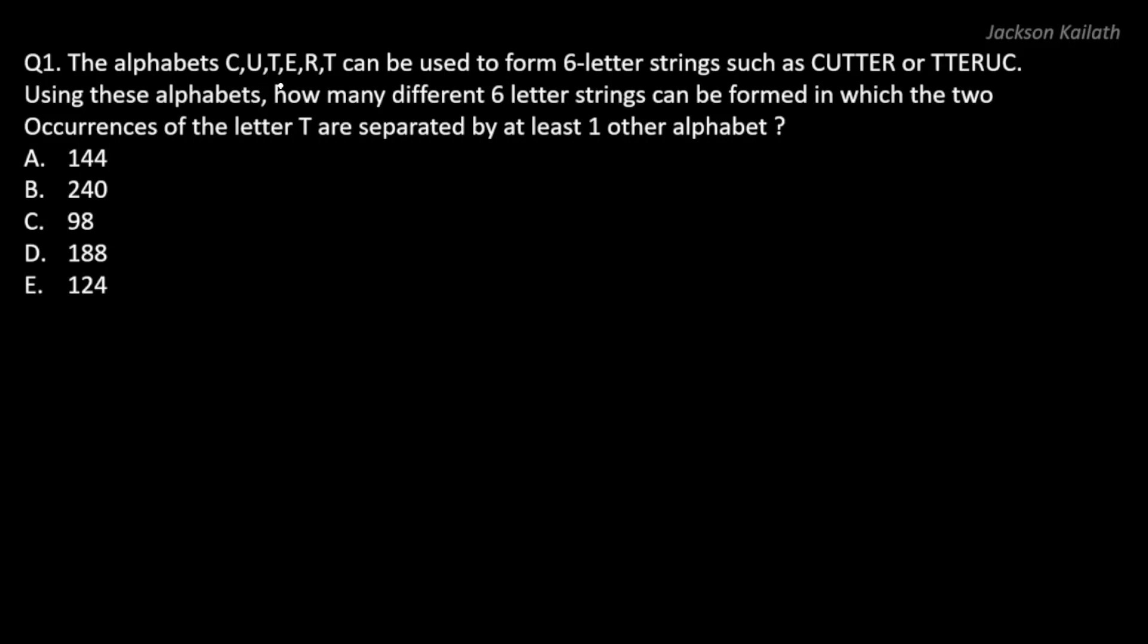Let's read the question. The alphabets C, U, T, E, R, T can be used to form six-letter strings such as CUTTER, TERUC, etc. Using these alphabets, how many different six-letter strings can be formed in which the two occurrences of the letter T are separated by at least one other alphabet?